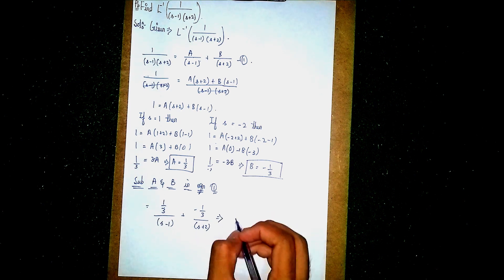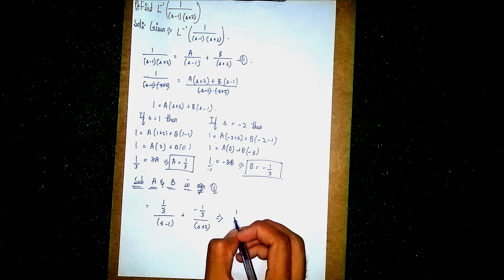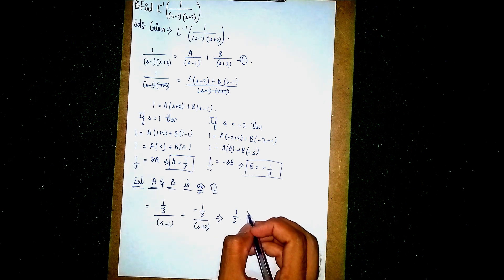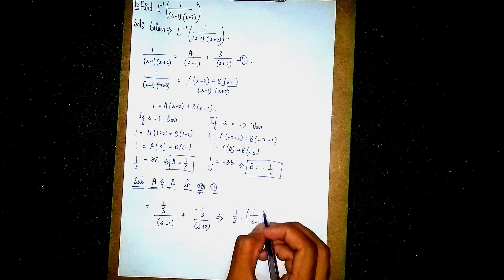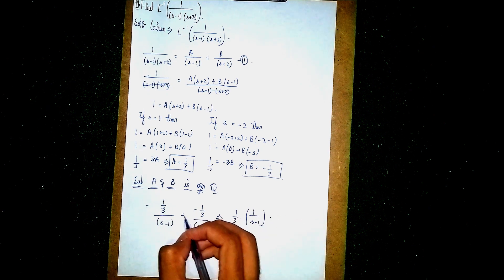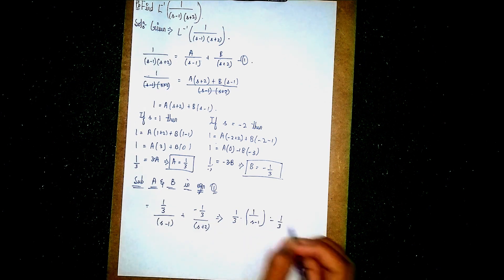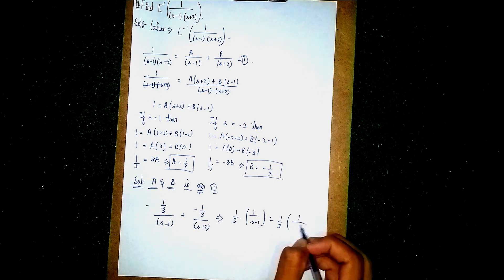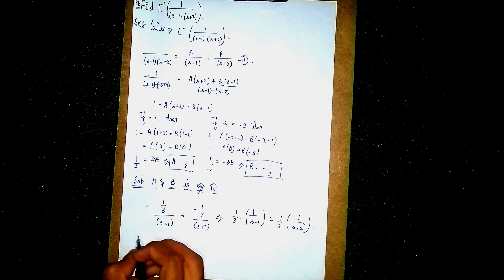Taking the constants out, this becomes 1 by 3 into 1 by (s minus 1) minus 1 by 3 into 1 by (s plus 2). Now apply the Laplace inverse on both sides.